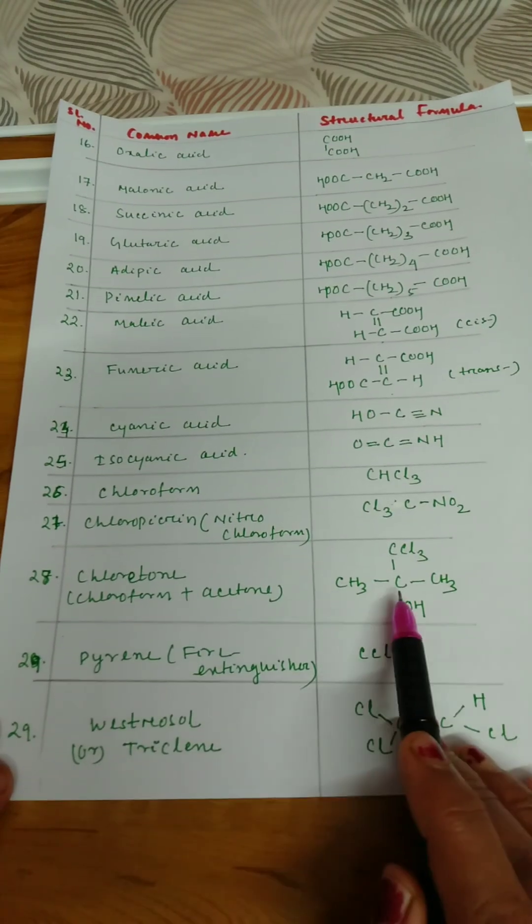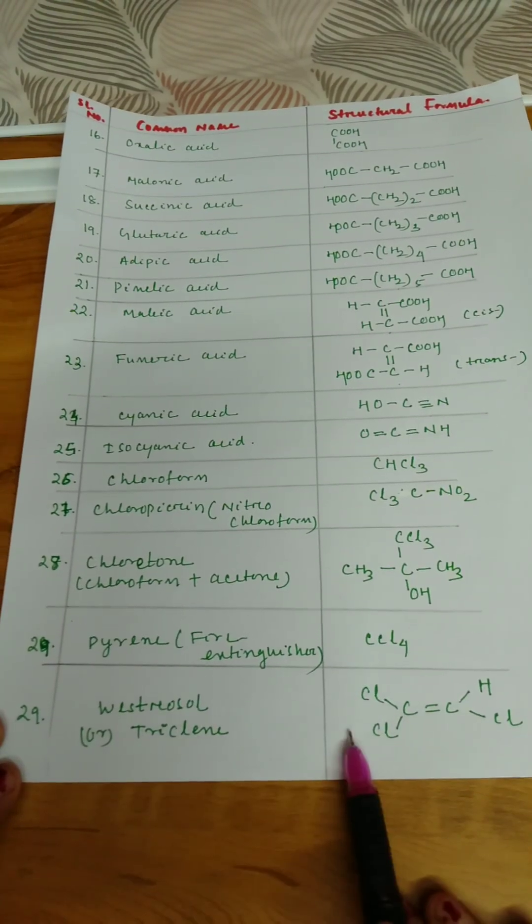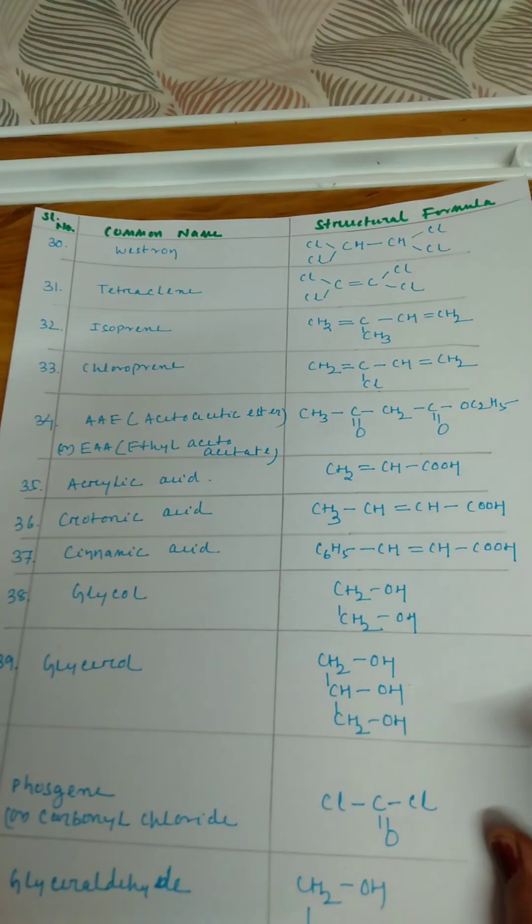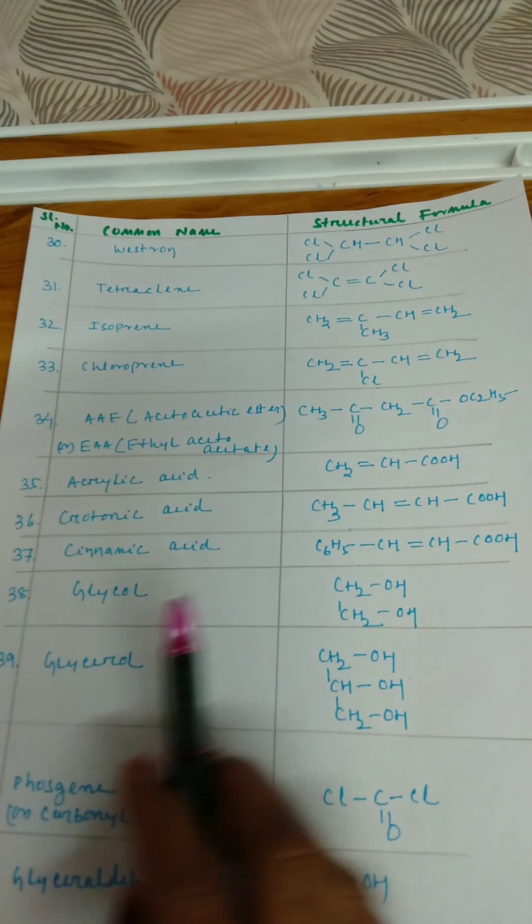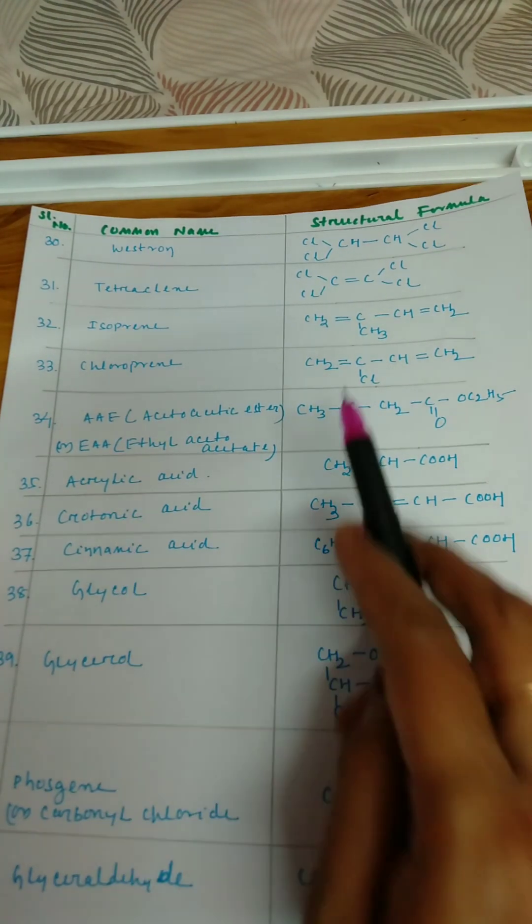Nitro chloropicrin is known as your chloropicrin. This is chloritone, this is spirine, and this is western sol. Similarly in this way some more examples are given to you.